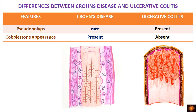Looking at mucosal surface appearances: pseudopolyps — polypoid projections of regenerating epithelium — are seen in ulcerative colitis but not in Crohn's disease. In Crohn's disease, we see a cobblestone appearance caused by healthy edematous mucosa present between the ulcers or scars. This cobblestone appearance is not seen in ulcerative colitis.